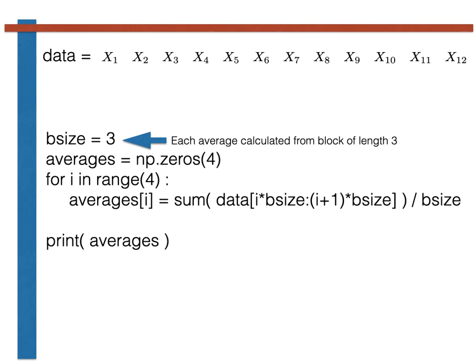The four averages we get from these 12 data points will be stored in the NP array called averages. This array has size 4, as there are 12 points in total and each average uses three data points. We can thus compute 12 over 3, i.e., four averages in total.